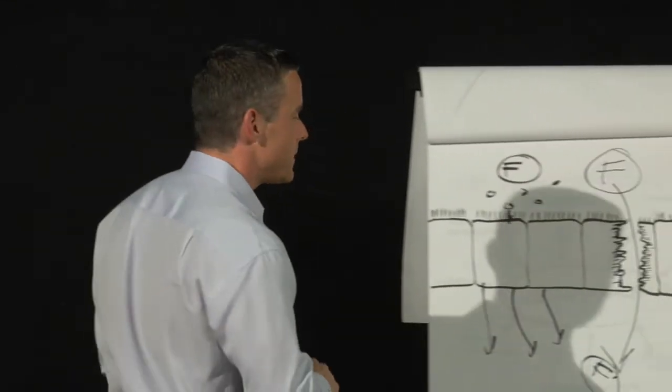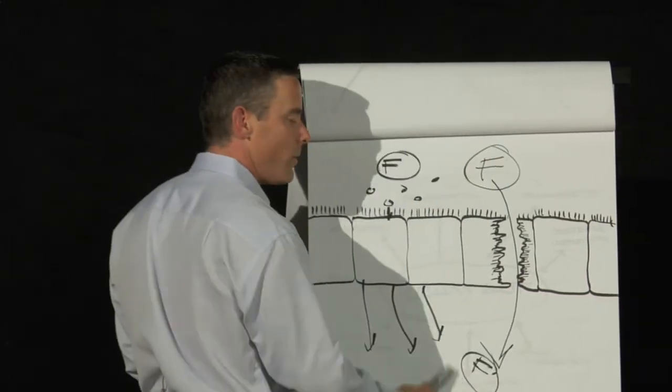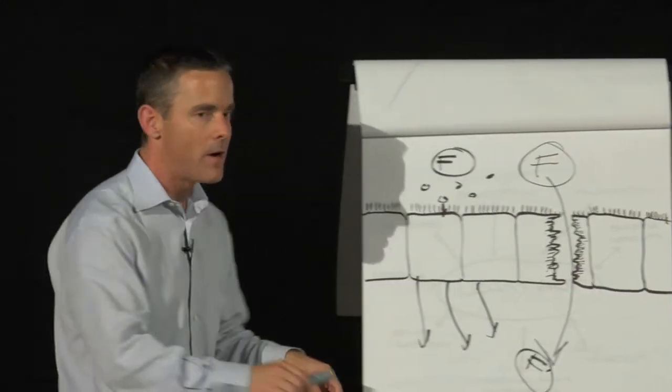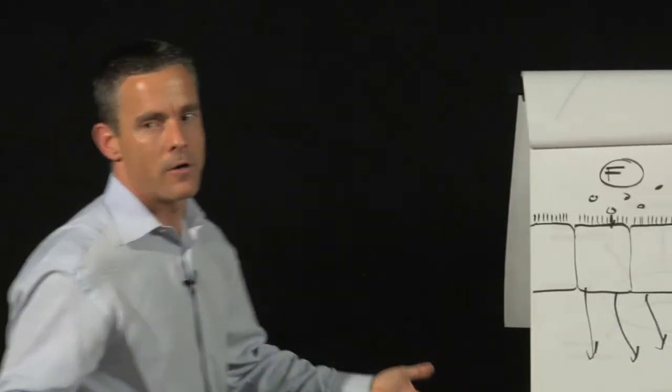Where your immune system starts saying it attacks the protein and all of a sudden looks around and says, but wait a minute, whoa, that structure over there, that looks exactly the same. I'm going to attack that too. Oh, look over there, that structure looks the same. And you have autoimmune disease.